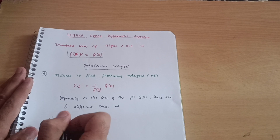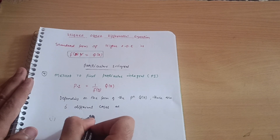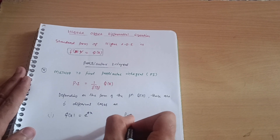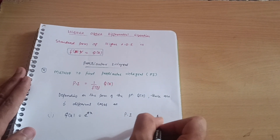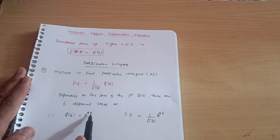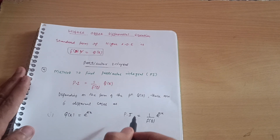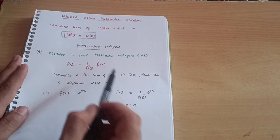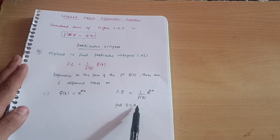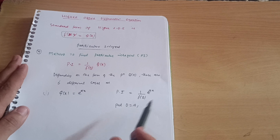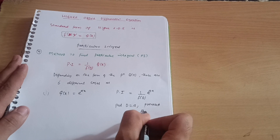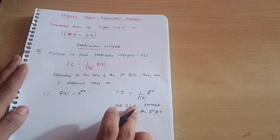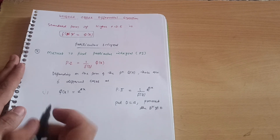The first case is when Q(x) = e^(ax). In this case, the particular integral is 1/f(D) · e^(ax), and you simply replace D with a in f(D). The condition is that the denominator should not be equal to zero. Only when the denominator is non-zero can you replace D with a.